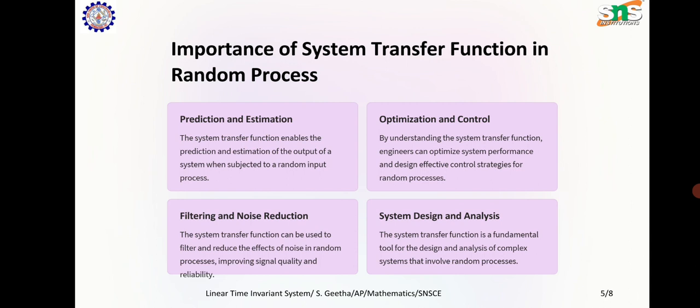The system transfer function enables the prediction and estimation of the output of a system when subjected to a random input process. By understanding the system transfer function, engineers can optimize system performance and design effective control strategies for random processes. Filtering and noise reduction — the system transfer function can be used to filter and reduce the effects of noise in random processes, improving signal quality and reliability. System design and analysis — the system transfer function is a fundamental tool for the design and analysis of complex systems that involve random processes.